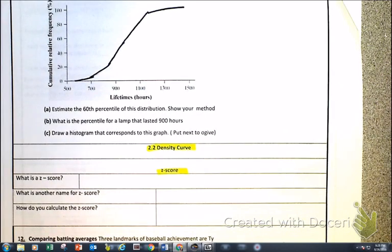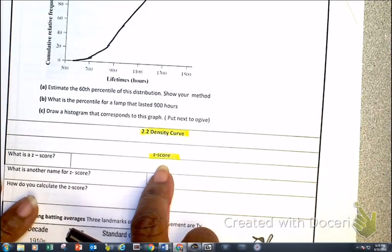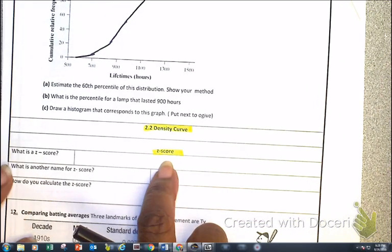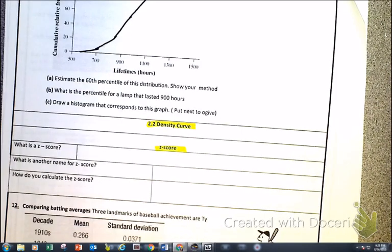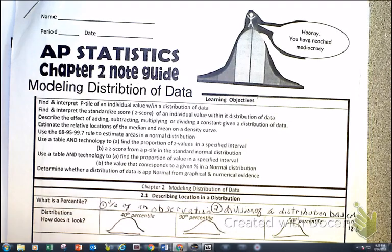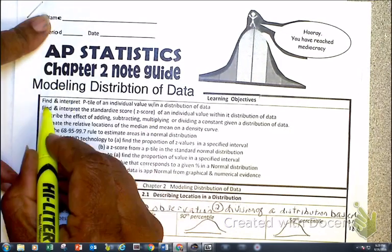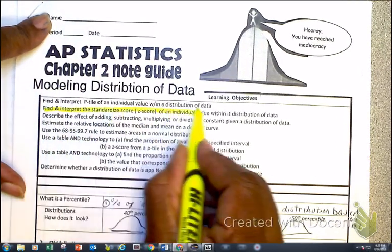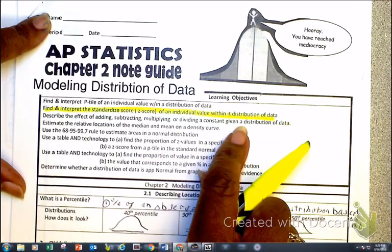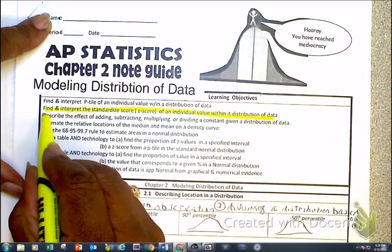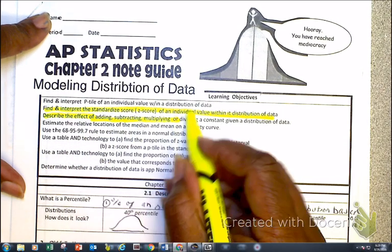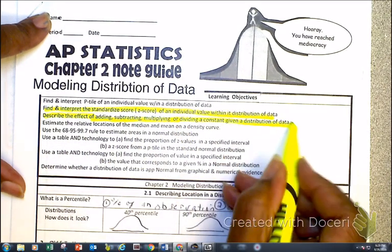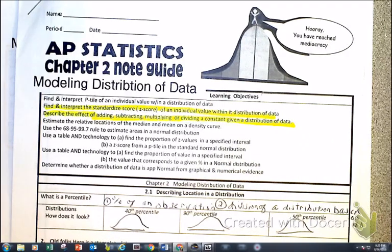Okay, wake up. We're not talking about snoring, we're talking about Zs, as in Z scores. Our objective is as follows: we're going to find and interpret the Z score of individuals within a distribution of data, and then describe the effects of adding, subtracting, multiplying, and dividing a constant to a given data distribution.